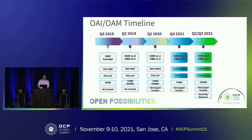Here is our evolution and roadmap. We started in 2019 with just the Open Accelerator Module, designed to support up to 450 watt TDP — pretty high for that timeframe — and high bandwidth was supported through 25 gig NRZ. Fast forward to today, we're trying to release OAM 1.5 spec in the next few weeks, along with Universal Baseboard version 1.5 spec. Within this spec, we will enable support for 112 gig PAM4, as well as PCIe Gen 5 and 700 watt TDP per accelerator. The UBB has up to eight accelerators, so we're talking about close to six kilowatts just for baseboard power delivery.